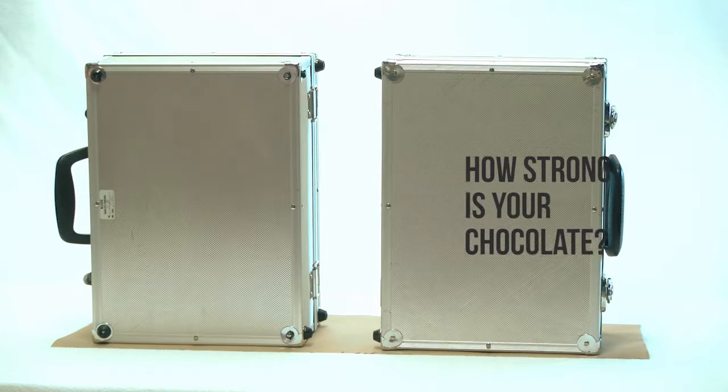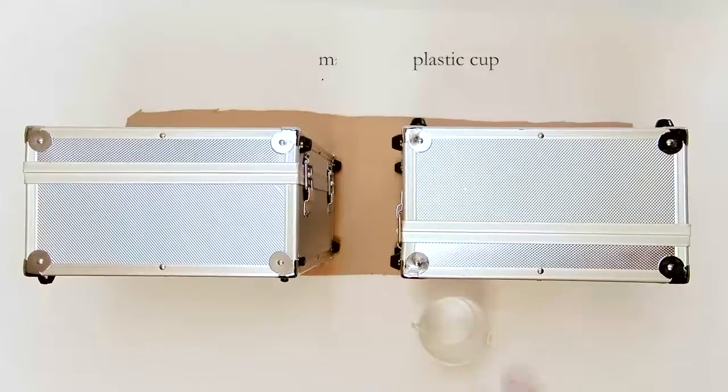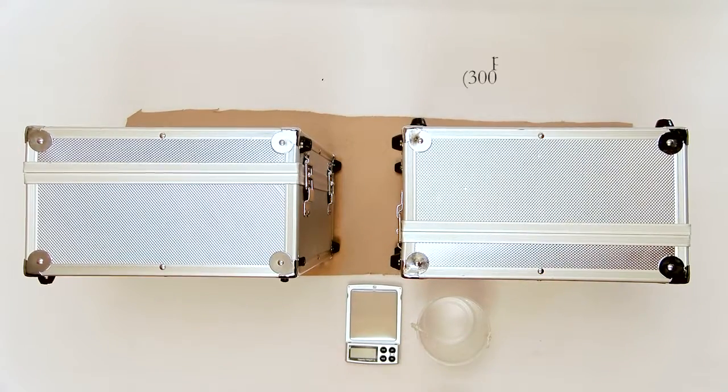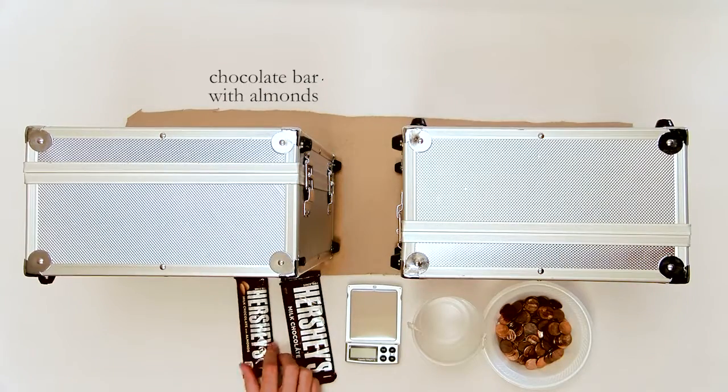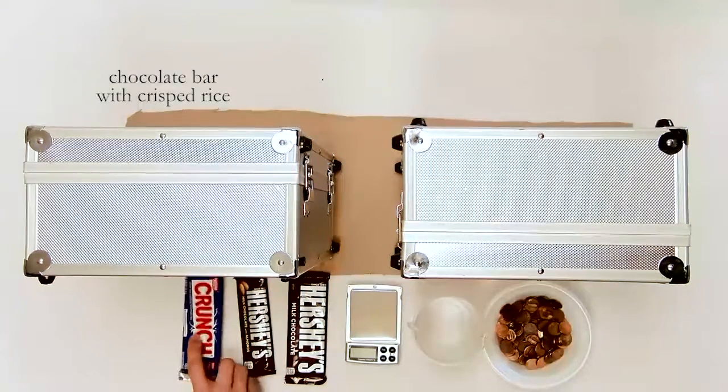The materials needed for this demonstration are plastic cups, a mass balance, pennies, chocolate bars, chocolate bars with almonds, chocolate bars with crisped rice, and a ruler.